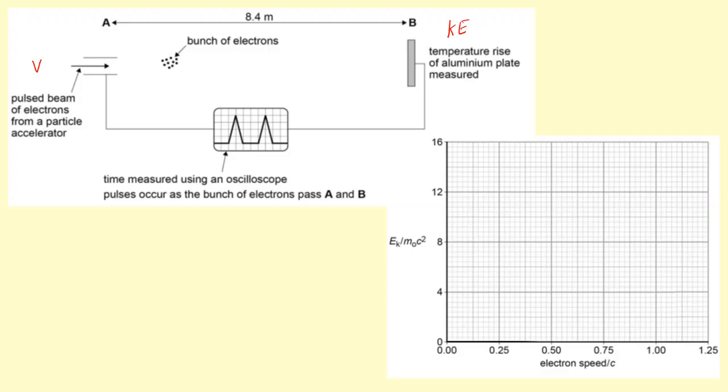Now this is what we would expect if classical theory or Newtonian mechanics were right—the kinetic energy was half mv squared. But this is not what was obtained. Instead, we get something like this. You can see that the kinetic energy increases quite quickly as you approach the speed of light.